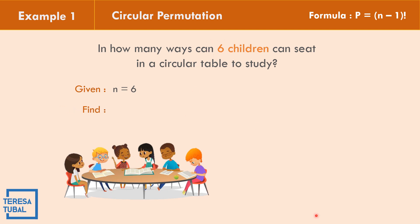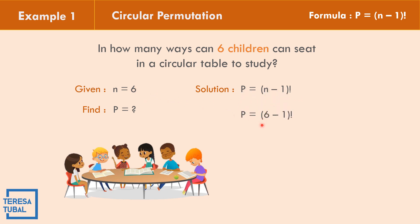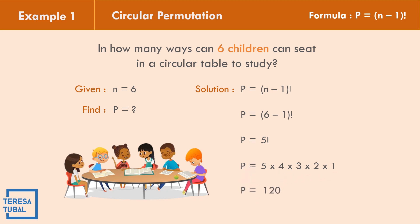We will find the permutations of 6 children seated at a circular table. Using the circular permutation formula P equals (n minus 1) factorial, we replace n with 6: P equals (6 minus 1) factorial, which is 5 factorial, equivalent to 5 times 4 times 3 times 2 times 1. So the permutation equals 120 ways.